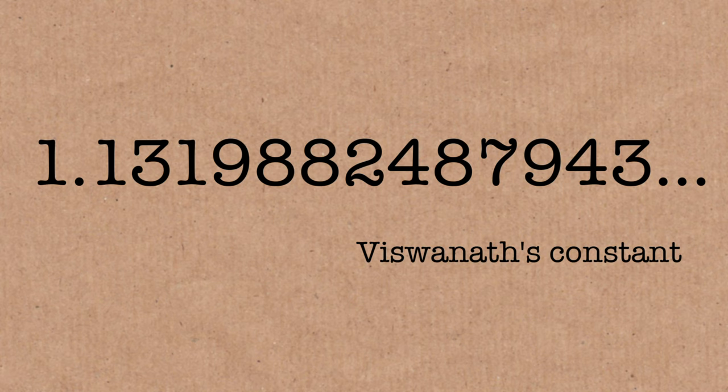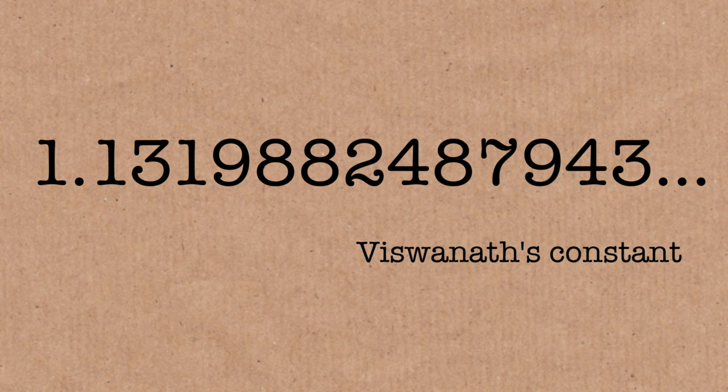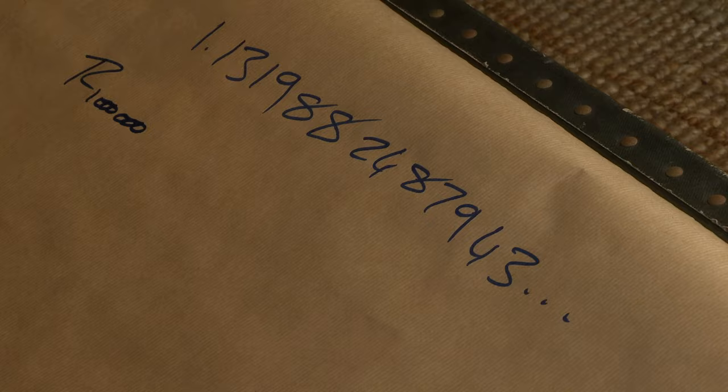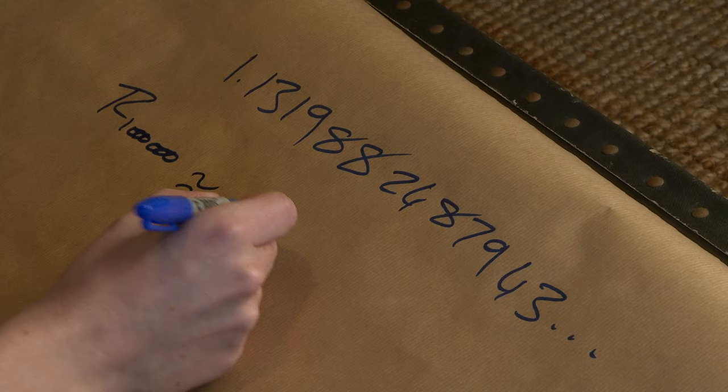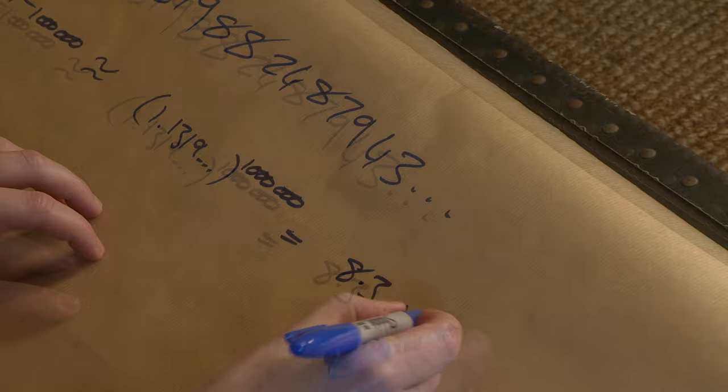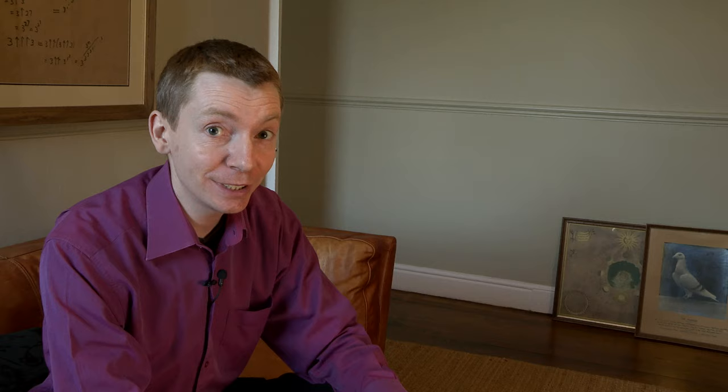So the surprise is, I can make some predictions. I can make some long-term predictions. For example, I can tell you what the millionth random Fibonacci number is going to be. Because, like the original Fibonacci sequence, there is a growth ratio. It's 1.13198824879943 something something something. So this is a constant, and it's going on forever, which means we can use this to predict the millionth random number.